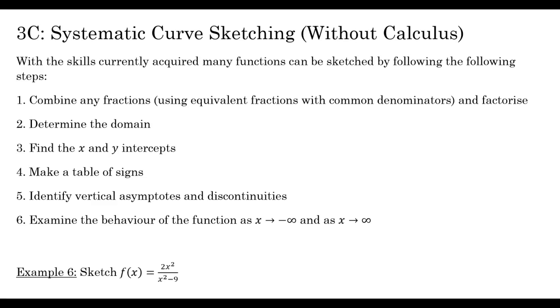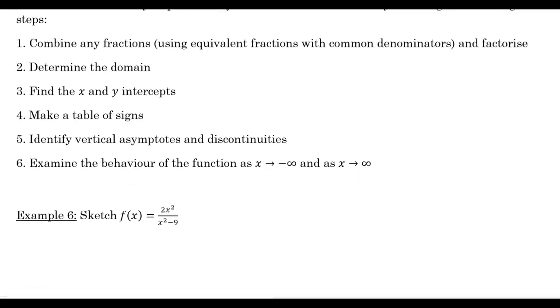Find the x and y intercepts. For an x-intercept y equals zero, for a y-intercept x equals zero. The y-intercept is usually very easy to find. The x-intercepts, that's where we want it to be factorised typically. And then we use our null factor theorem to do those. A table of signs. So we look for the y-intercepts, as well as restrictions on the domain. Remembering that a function can't go from positive to negative. The sign of a function can't change without either crossing the x-axis or having a discontinuity or asymptote.